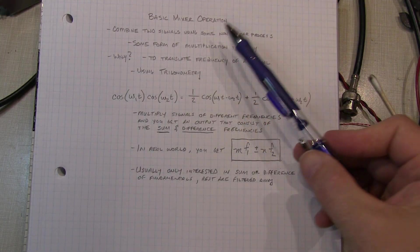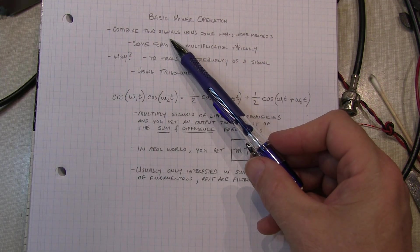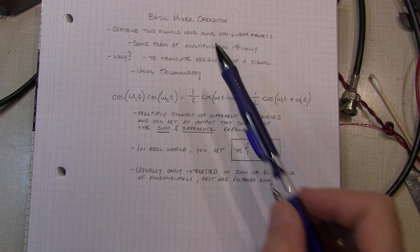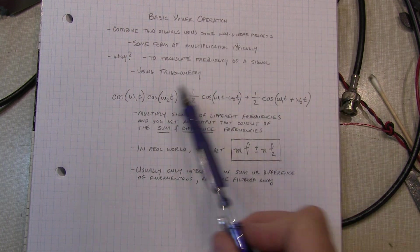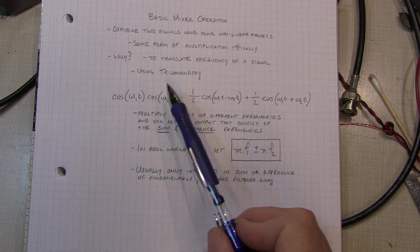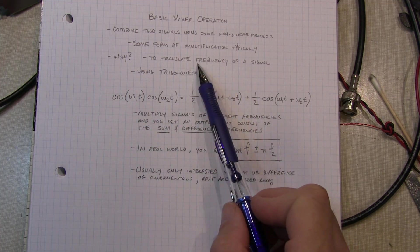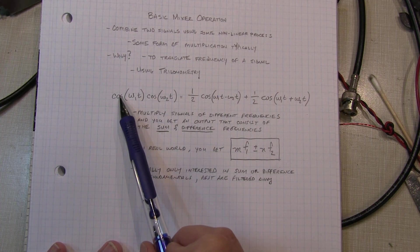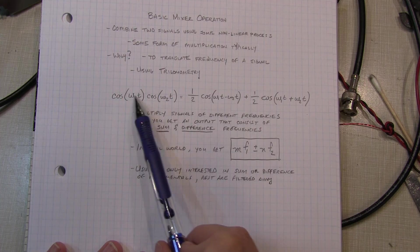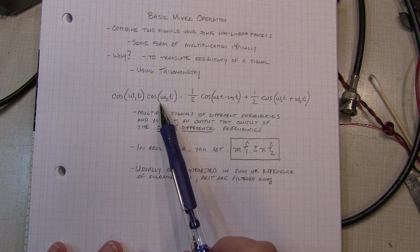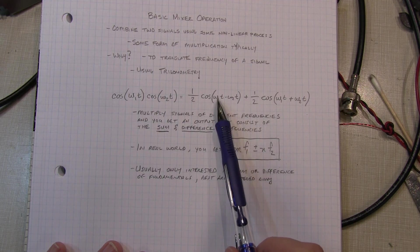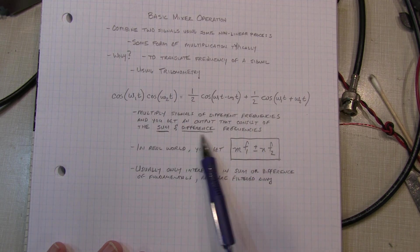The idea here is that we take two signals at two different frequencies and combine them using some nonlinear process, usually some form of multiplication. And why we do this is usually to translate a signal at one frequency to another. And the simple math behind it is that if you take two sinusoids at two different frequencies, multiply them together, the output will basically contain energy at the difference frequency and the sum frequency.